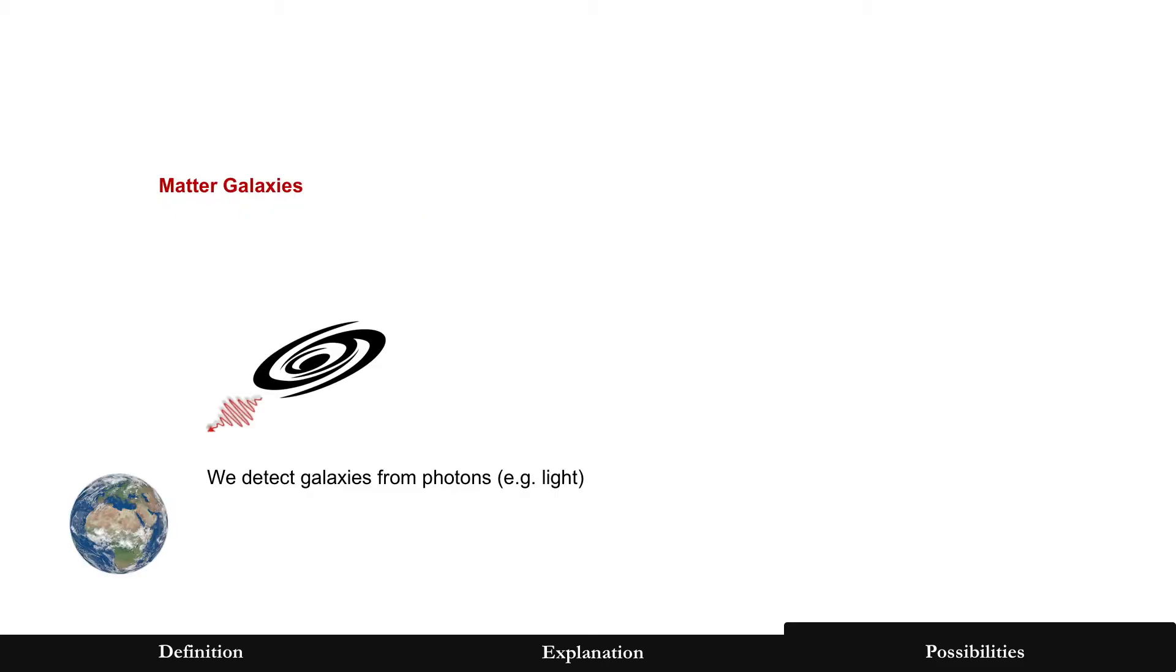So for the first one, how do we detect galaxies? Well, from photons, for example, light, a telescope, and you're looking at the lights, and there's other forms of photons, for example, detecting gamma rays, microwaves. But with a simple telescope, we can look up into the sky and detect galaxies. That's how it happens.